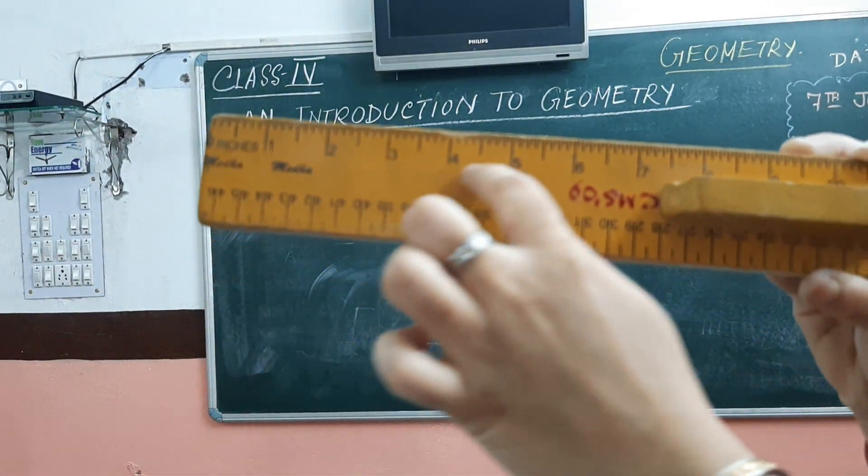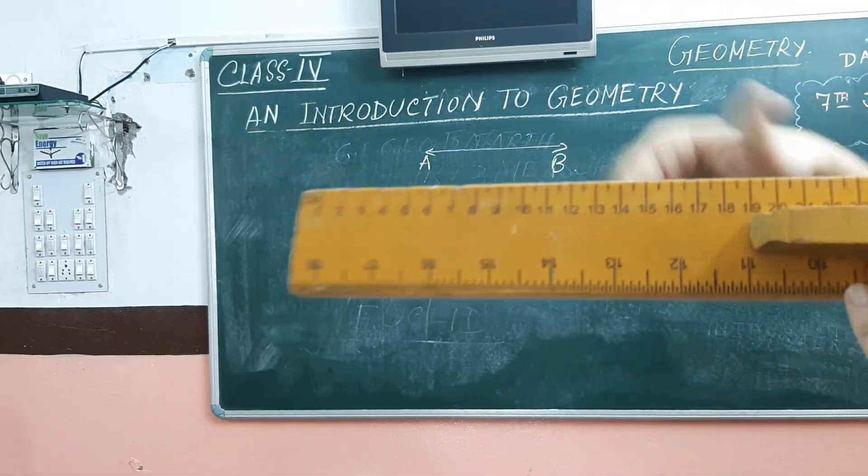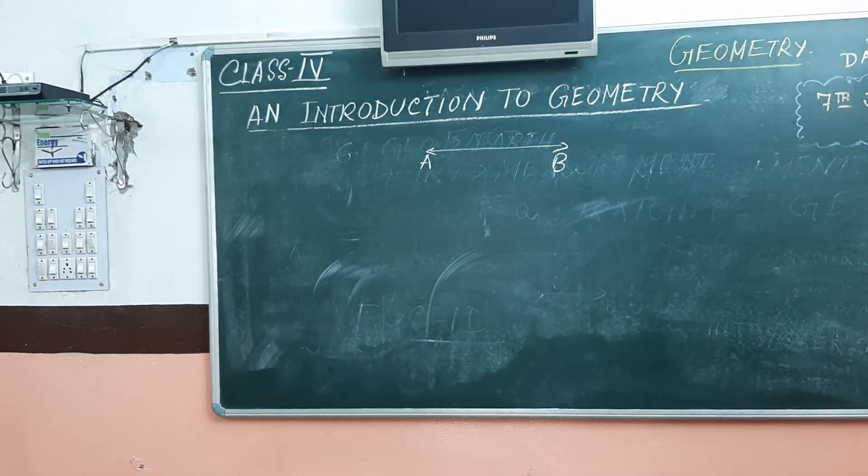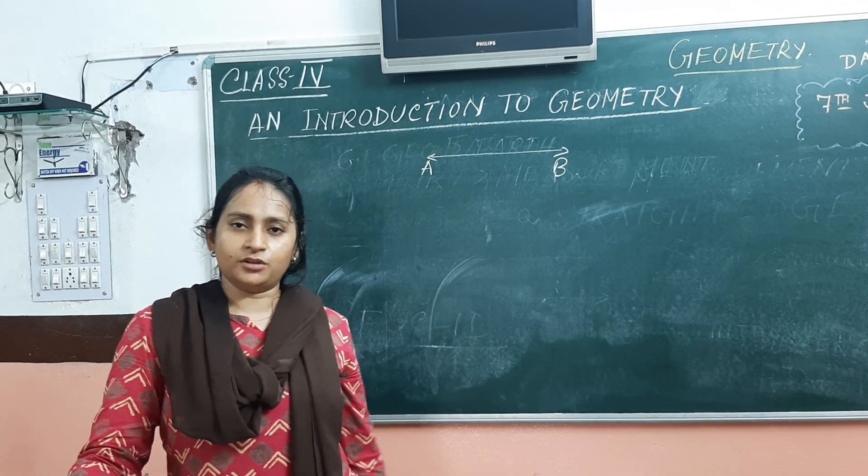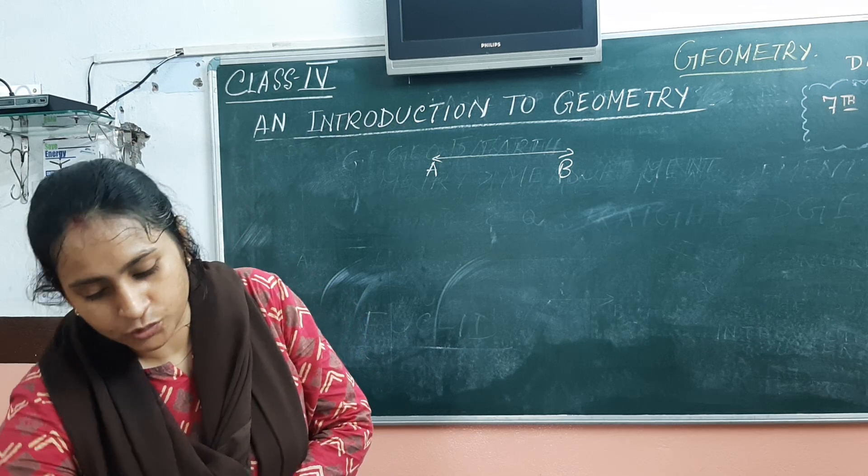See? These are graduations in inches and this side, it is graduated into meters and centimeters. Why? Because we can measure straight lines with the help of this ruler. Now let's move on to the next tool